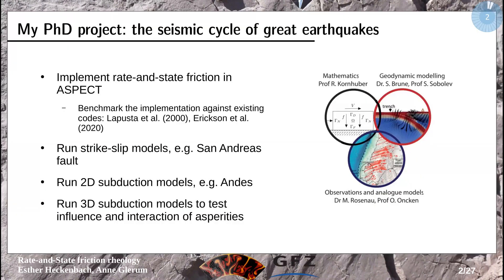My PhD project and why I do this with rate and state friction is that I want to model the seismic cycle of great earthquakes, and for that I am implementing the rate and state friction equation in ASPECT. I'm planning to benchmark the implementation against existing codes, and then hopefully run some real strike-slip models like the San Andreas, and maybe then move on to subduction models like the NDS in 2D and maybe even 3D.